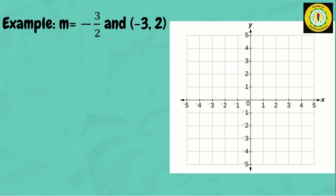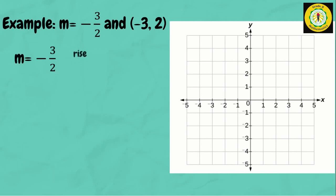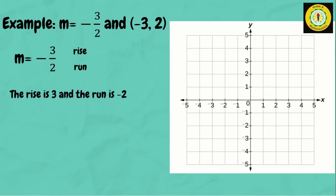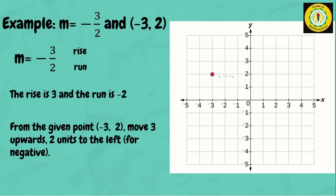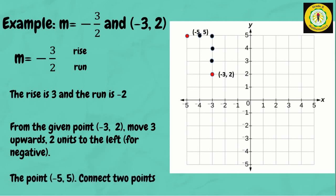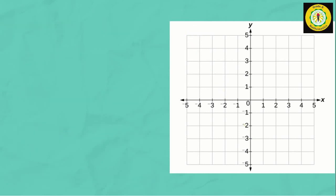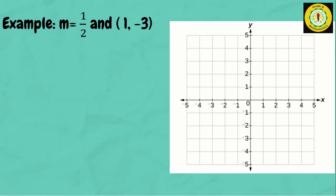Second example: the slope is negative 3 over 2 and the point is (negative 3, 2). So m equals negative 3 over 2, where the rise is 3 and the run is negative 2. From the given point (negative 3, 2), move 3 units upward and 2 units to the left. The other point is (negative 5, 5). Connect the two points with a straight line.